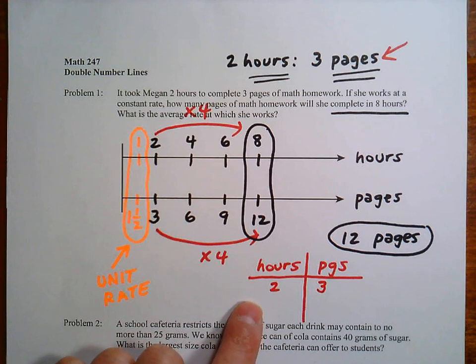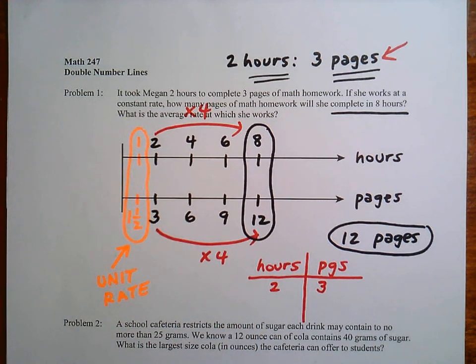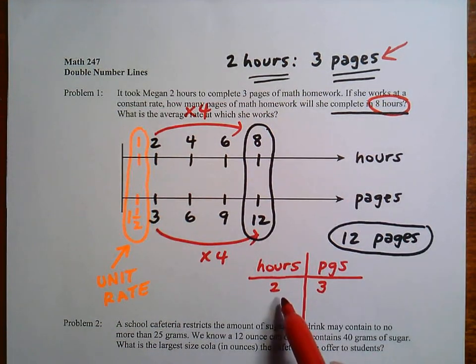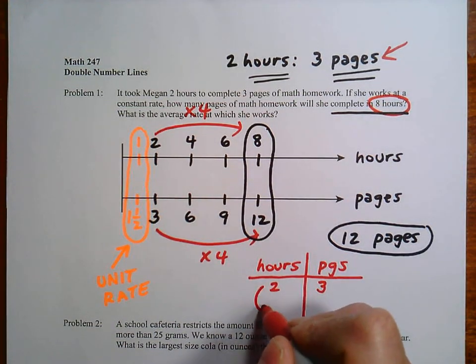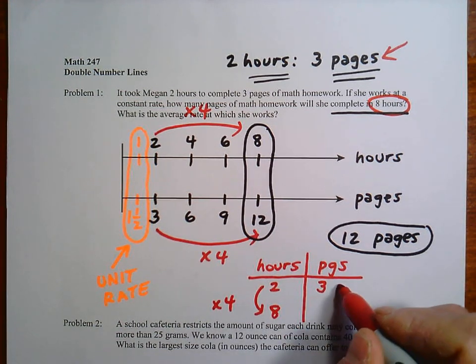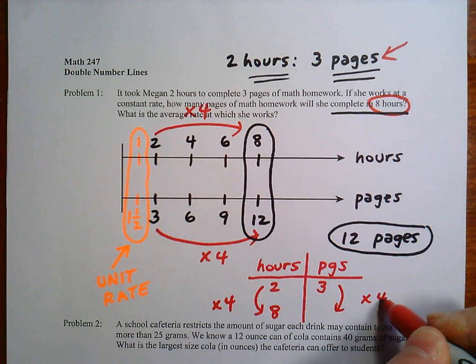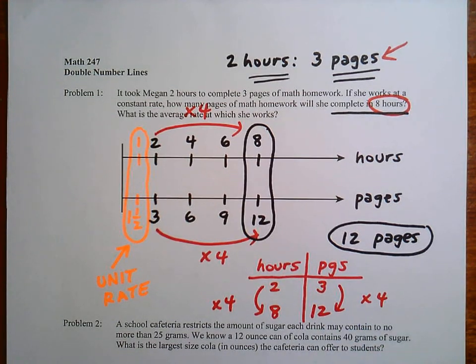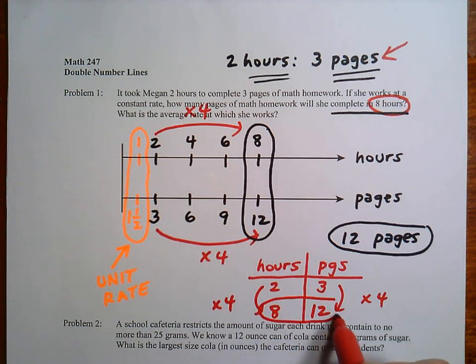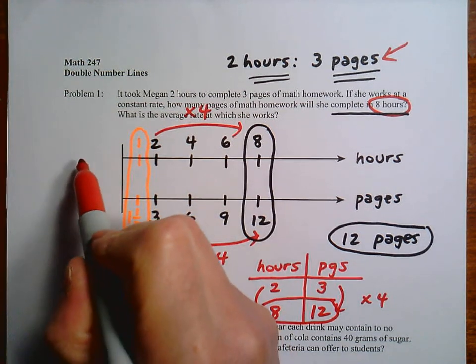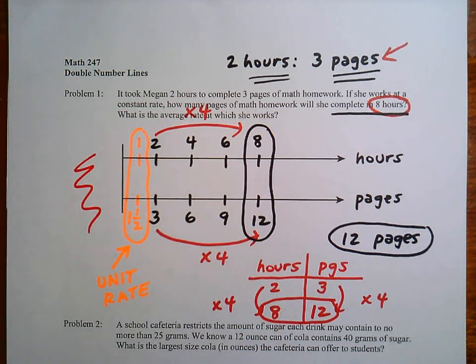If you use a ratio table, it's basically the same as using the double number line. So we want to land on 8 hours. So we can look at the 2 and we can just say, let's multiply by 4, and that will land us on 8 hours. And we have to do the same thing here, multiply by 4, and that will land us on 12 pages. So just like the double number line, you get the answer to the problem. So that's really how it works. The main thing I want you to understand is just how to use this.